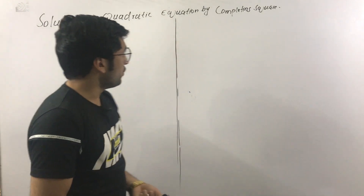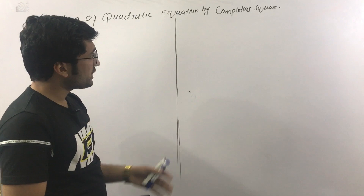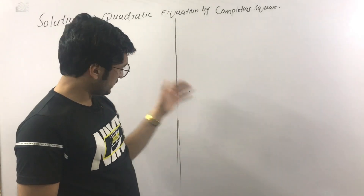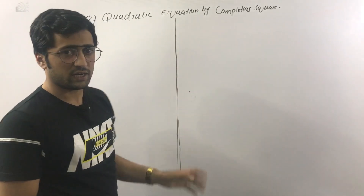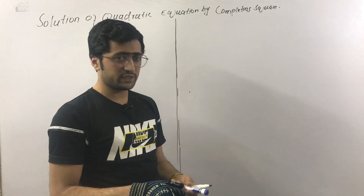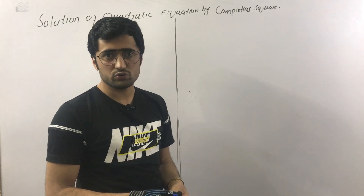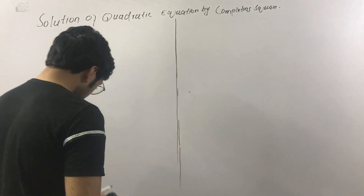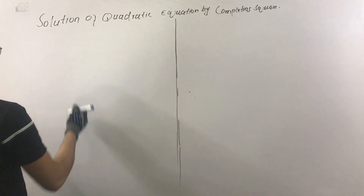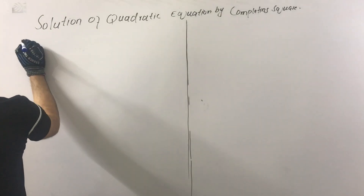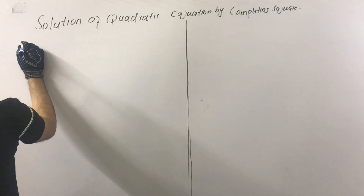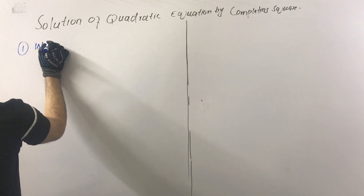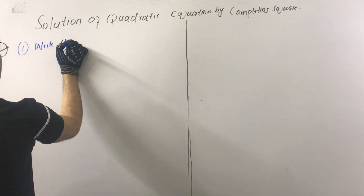On the board we have two sections. In the next section we will start the example. In the following section we will go through tips. We will start with the notes. One step is to write the given information.